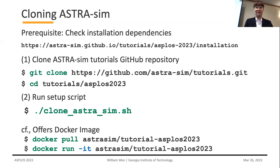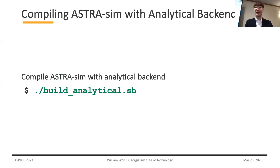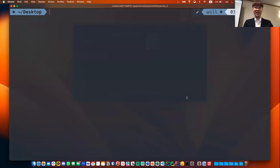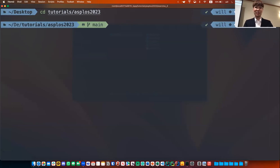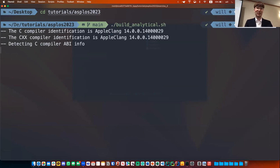We offer two ways to download AstroSym. You can either clone it locally from the GitHub repository and run the clone AstroSym script, or we also offer a Docker image. Once cloned, you can build AstroSym with the analytical backend by running the build analytical script. I already cloned the tutorial AstroSym 2023 repository, so I can just run the build analytical script and it will start building the AstroSym frontend with the analytical network backend.